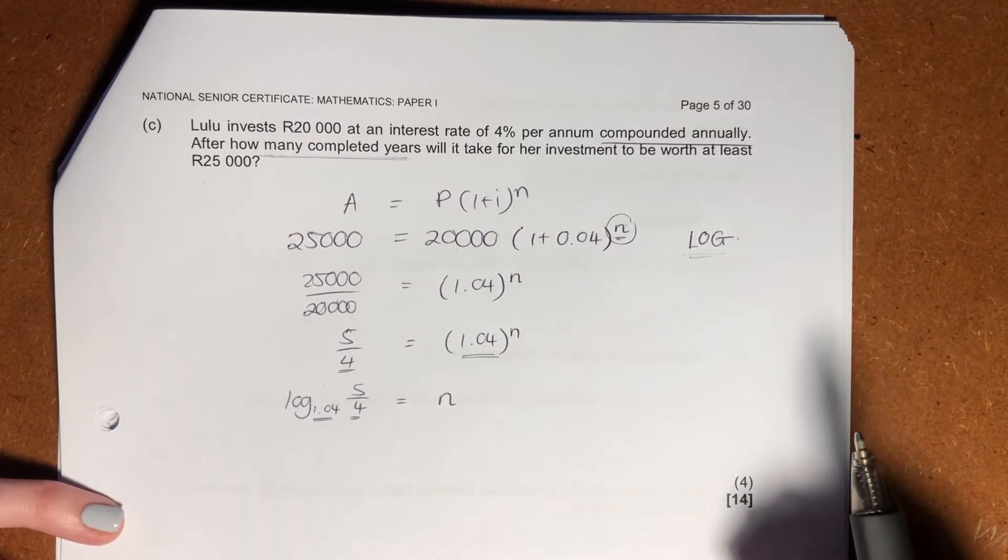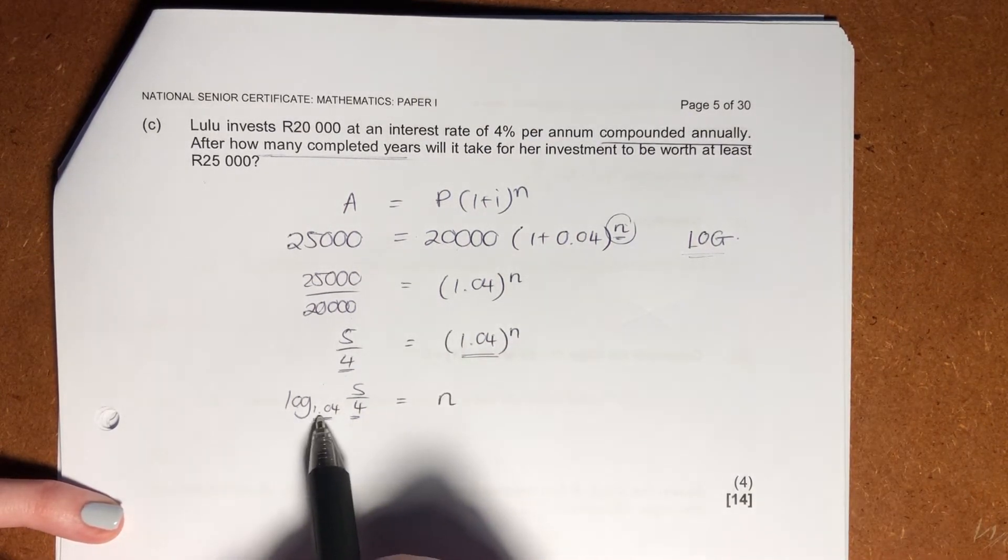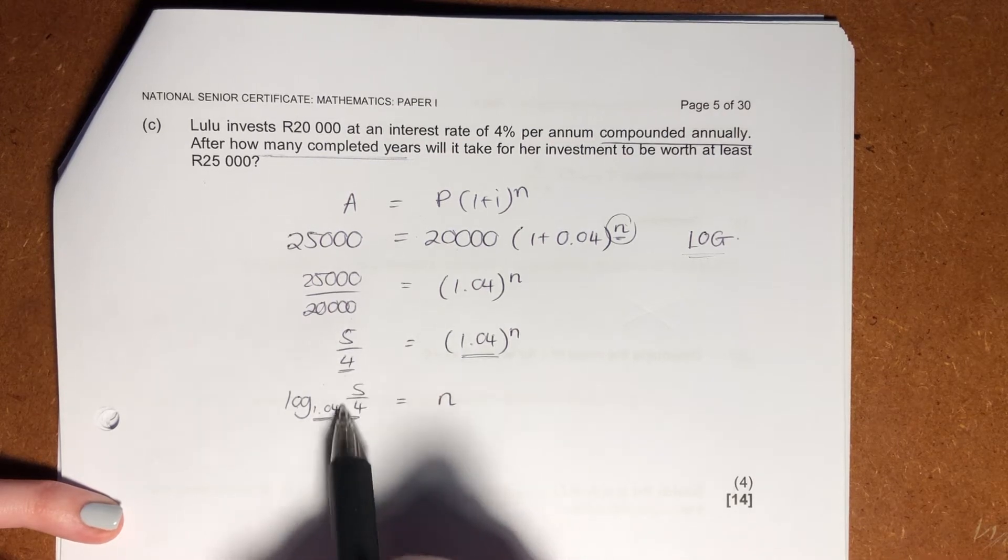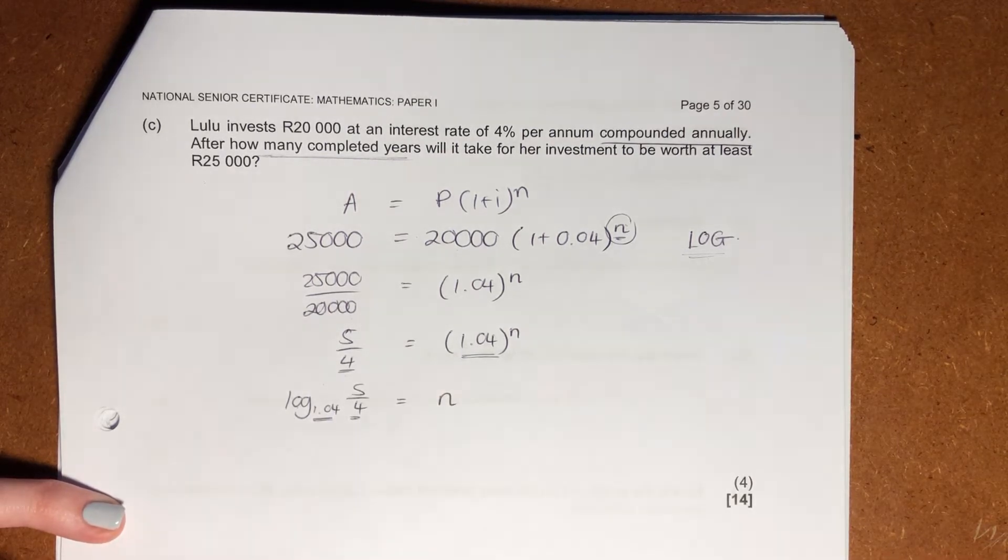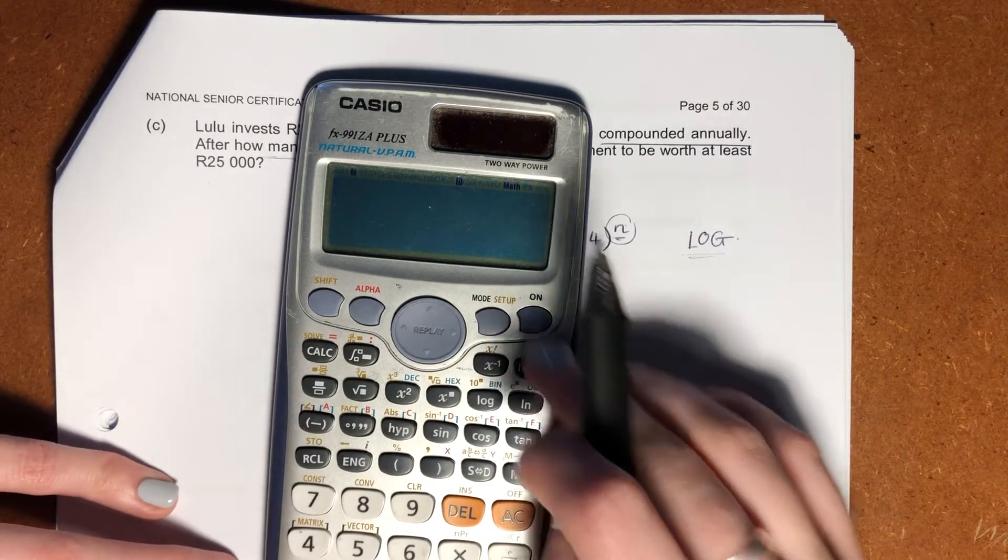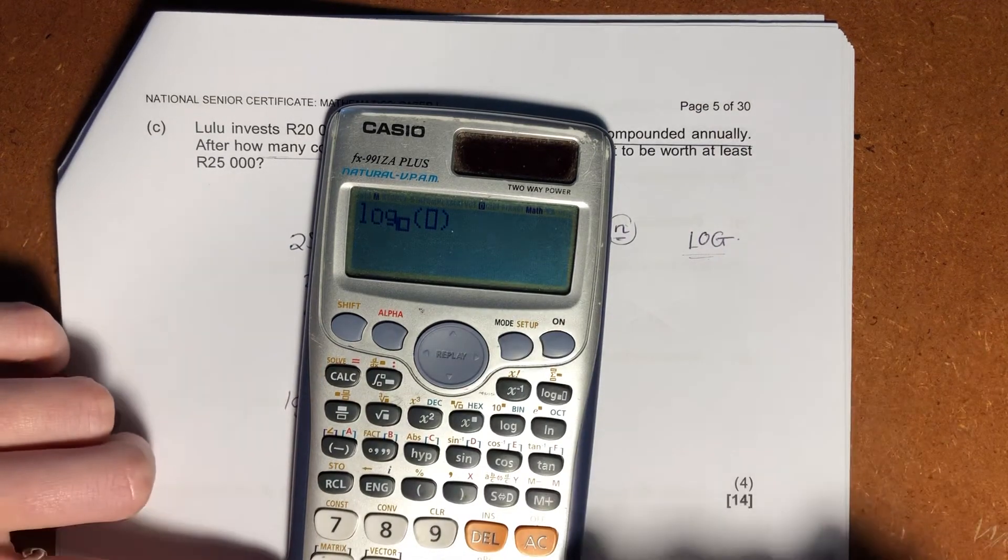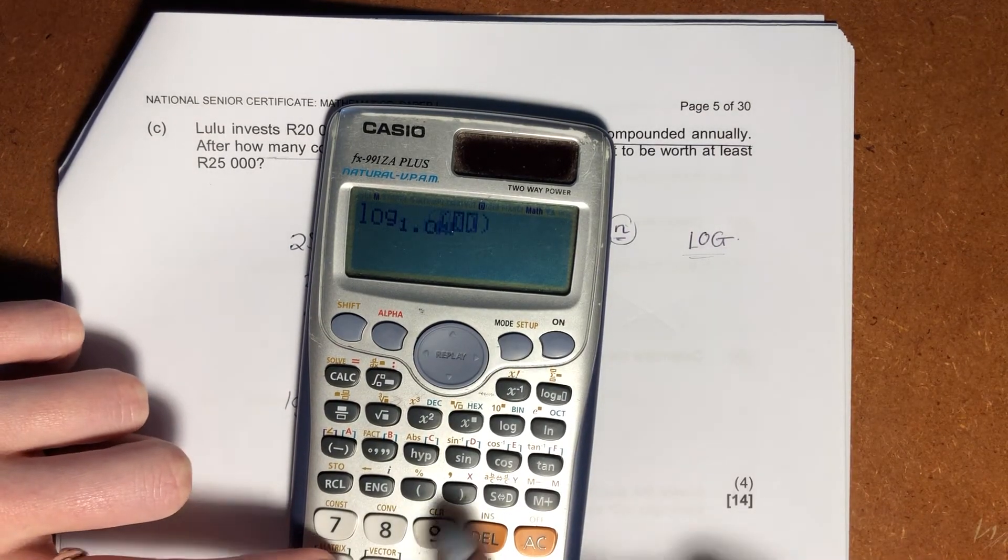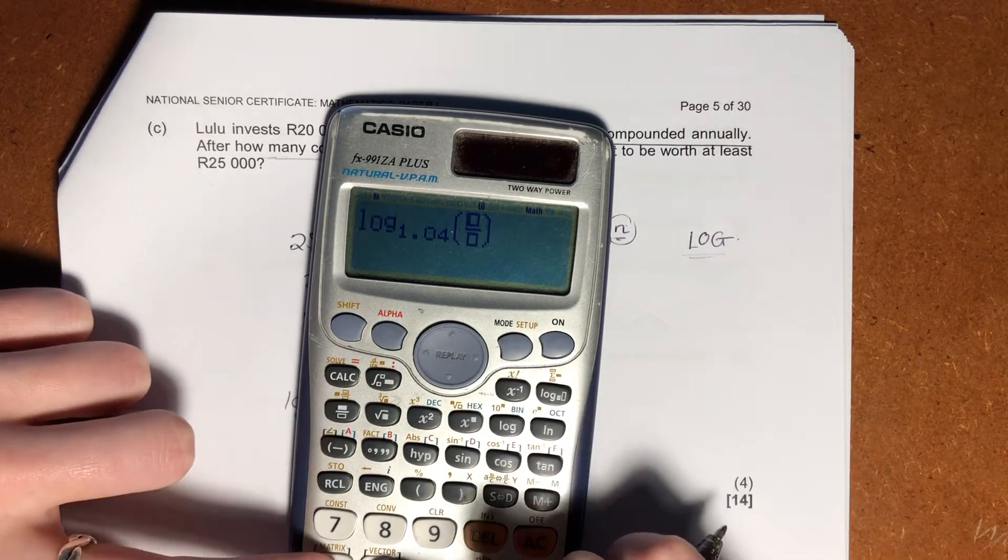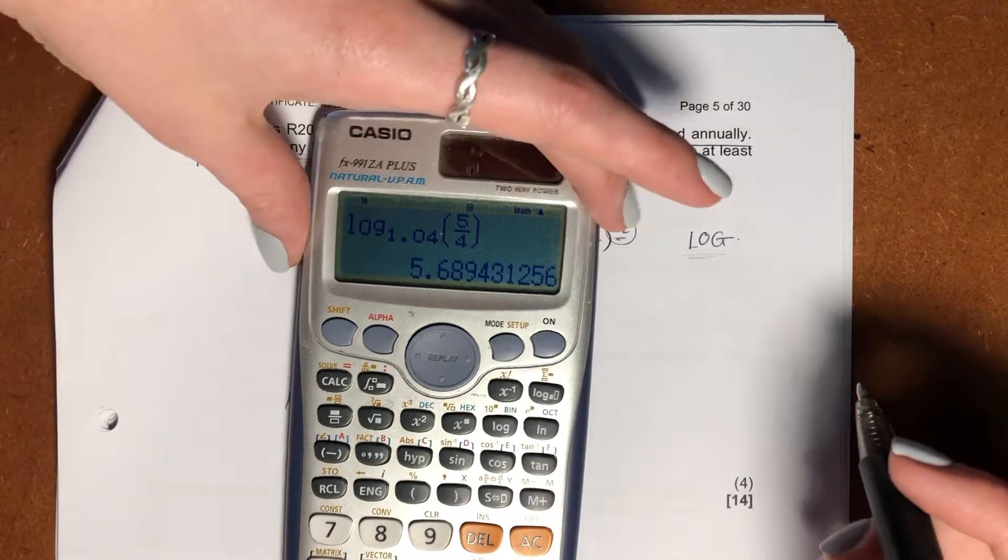Then I used log. Log says, use the base of my exponents as the base for log. Put my answer into log, and then that will equal my exponent. So I said that my calculator couldn't do this, but on inspection, it can. So there's your log function there. So I'm saying 1.04, I'm saying 5 over 4. And that is going to equal my n value.